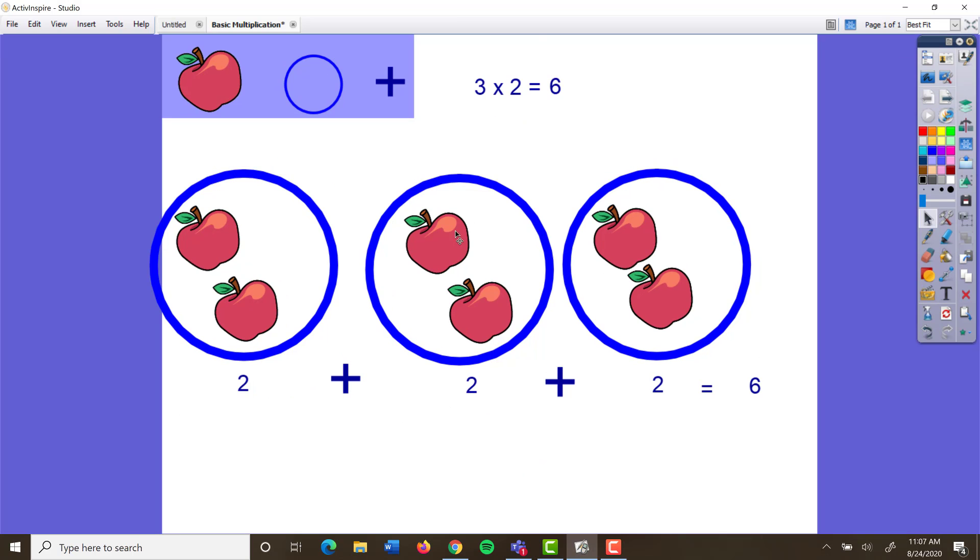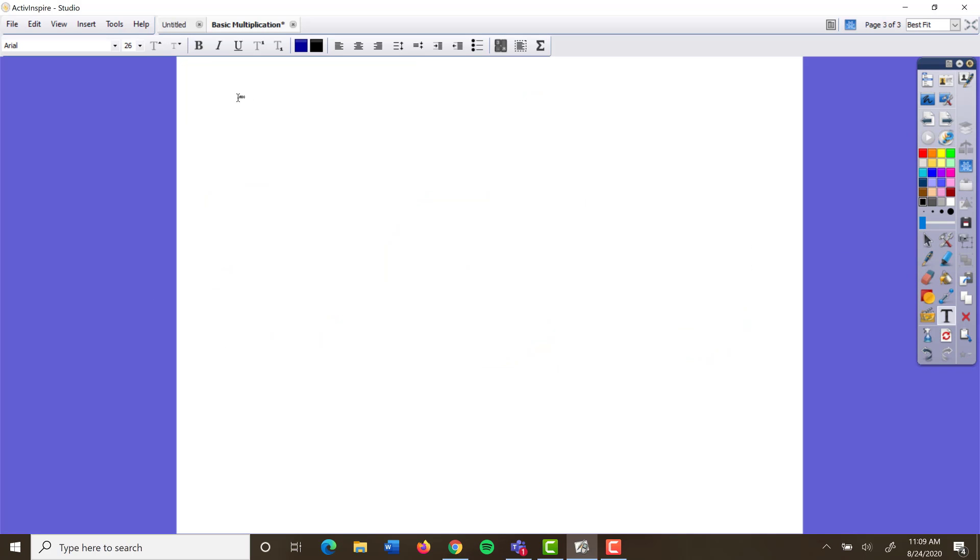Now, we have to memorize our times tables to make this very quick. But let's say for some reason you're just not able to memorize a particular fact. You can always add to get there. So let's say for example, I don't know the fact for five times three, or three times five.